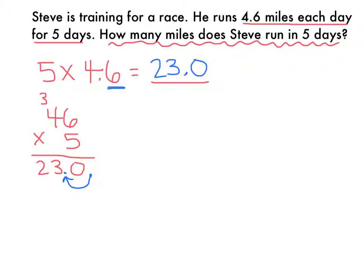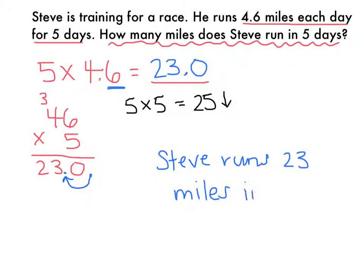Now, I need to ask myself, does this make sense? It does because if I round 4 and 6 tenths up, it's going to become 5, and 5 times 5 is 25, so I know my answer needs to be a little bit less than that. My final answer is that Steve runs 23 miles in five days.